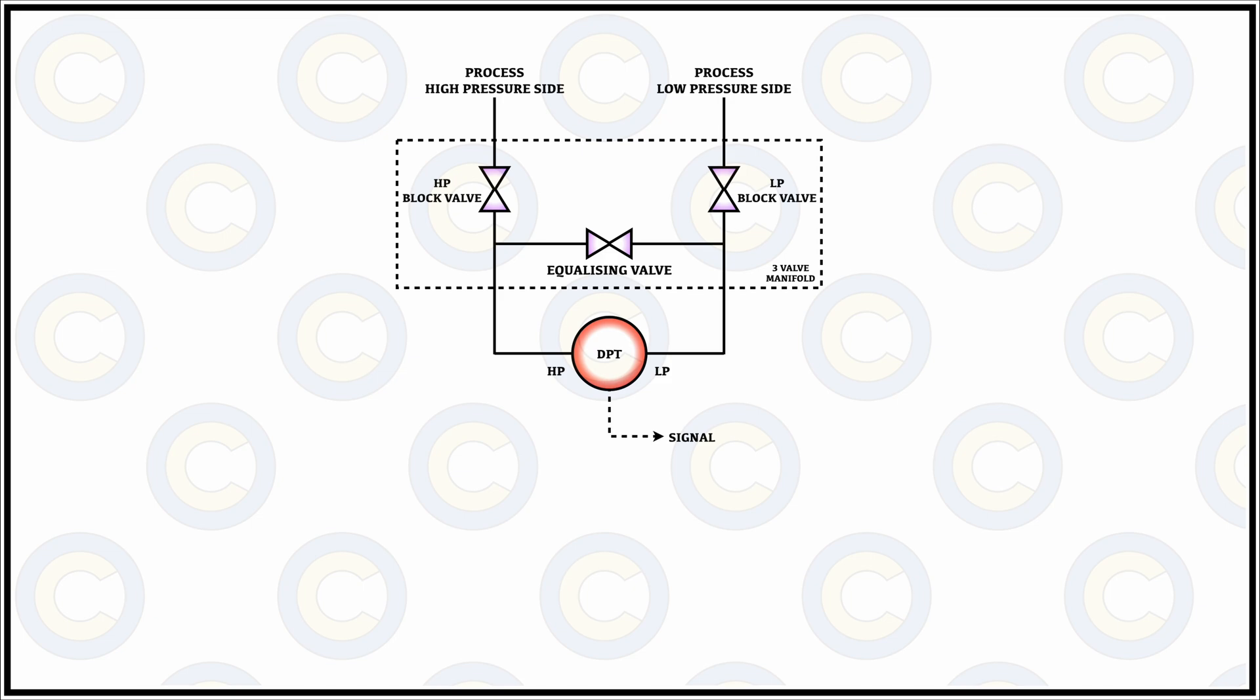To monitor this electrical output we can use a multimeter across the connections and because we know the 4 to 20 milliamp range of the operational condition of the DP transmitter, depending upon the electrical output we can easily understand what is the level that we are expecting at that particular value of current.